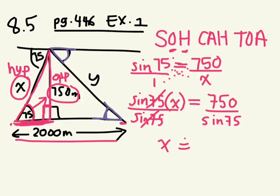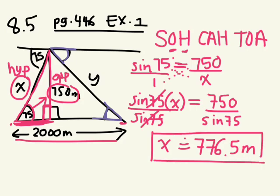750 divided by sine. Okay, so if we round it off to one decimal place, we get approximately equal to 776.5 meters. Now we know that x is 776.5 meters.